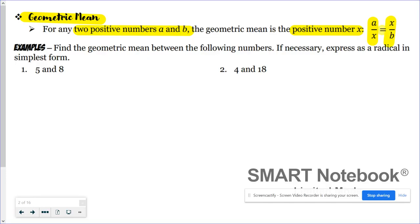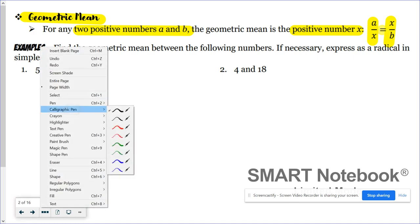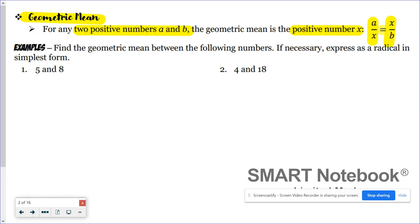Let's try finding the geometric mean for these problems. Feel free to pause right now, try it yourself, and check back in. For number one, I want to find the geometric mean between 5 and 8. I'll create a proportion like this: a and b are my 5 and 8, so I would have 5 over x equals x over 8.